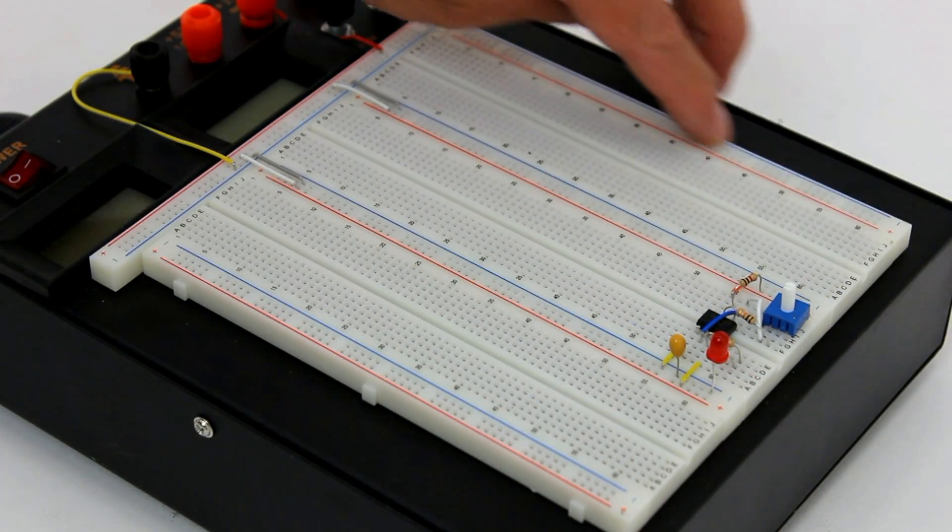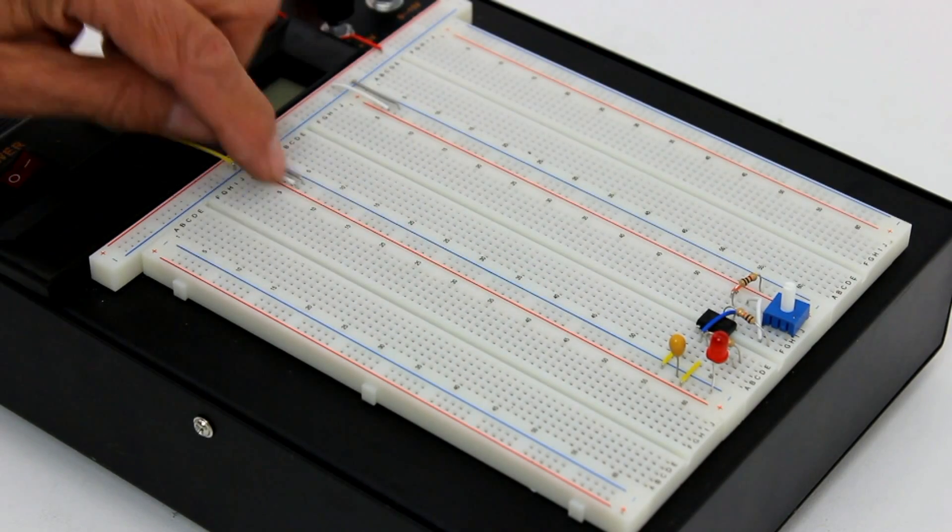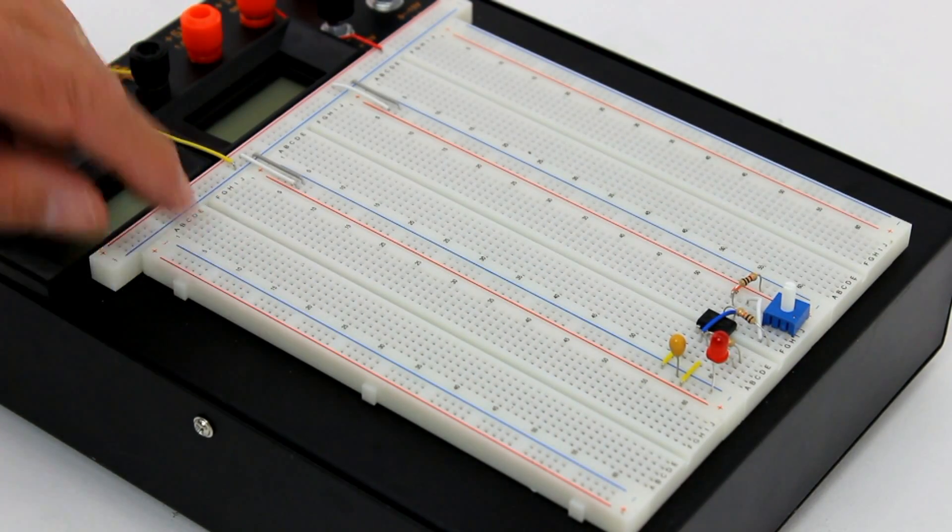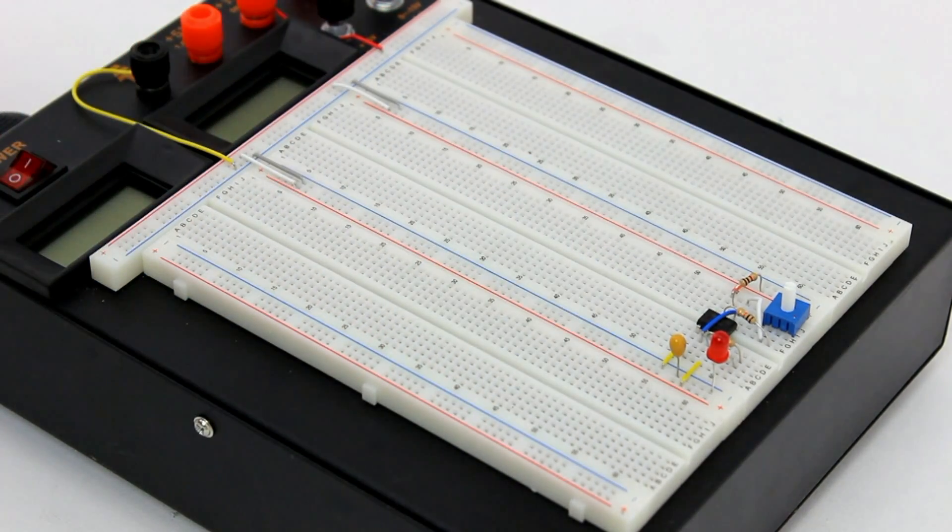Power and ground buses are provided in addition to the rows of interconnecting contacts used for connecting the components being used. The contacts are spaced at a tenth of an inch apart to accommodate the pitch of standard through-hole parts.